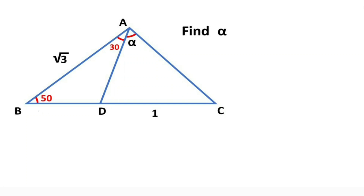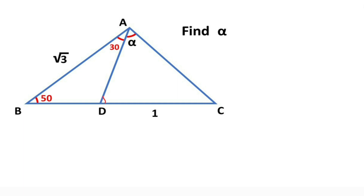In this video we have one triangle. Here is 50 degrees, here is 30 degrees, this length is given root 3, and this side is given one unit. Alpha is asked. First, we know that two interior angles equal the exterior angle — that means 50 plus 30 equals 80 degrees. And notice that here is 30 degrees and this side is given root 3.